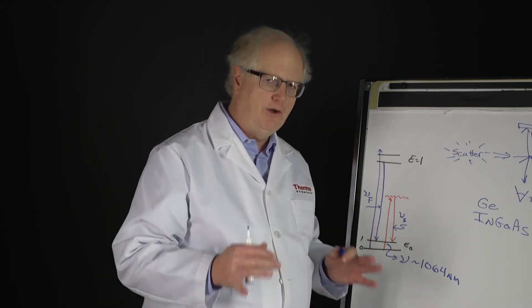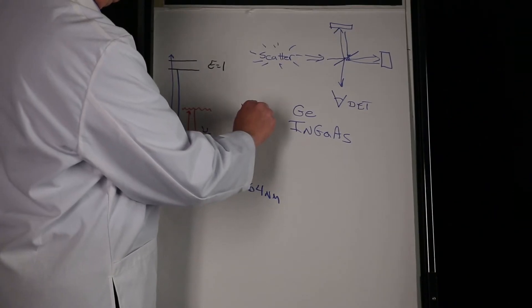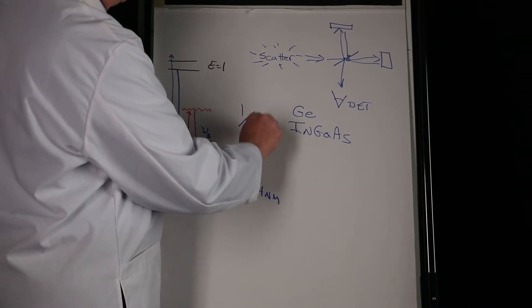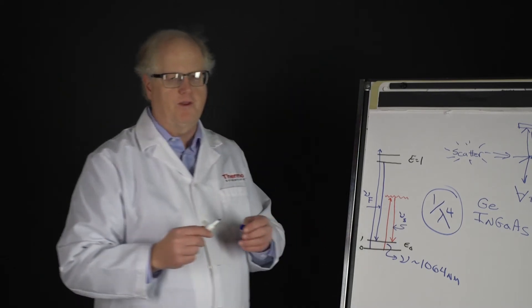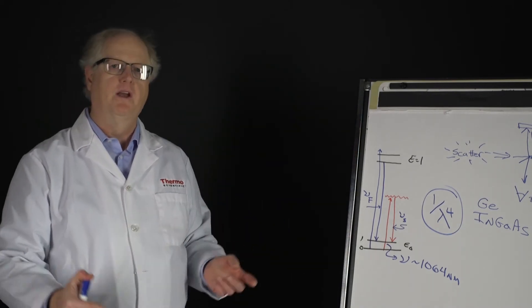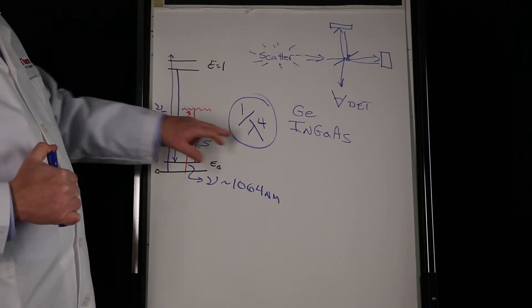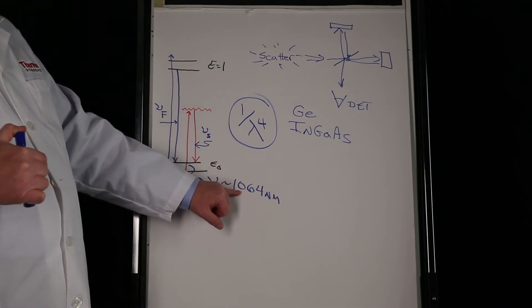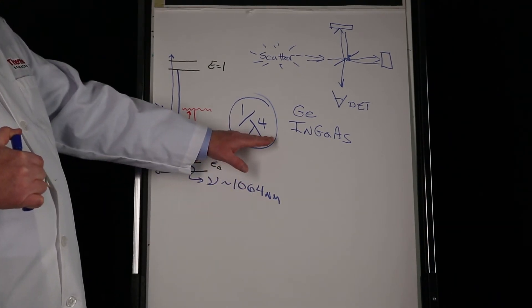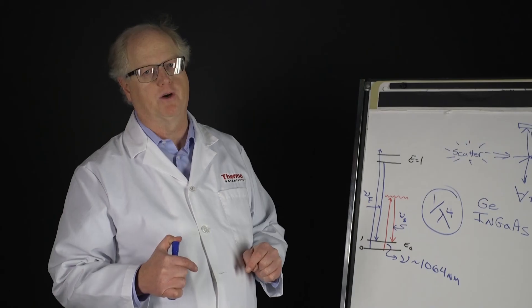So why doesn't everybody do this? It comes back to that big problem: you don't get something for nothing. It's the 1 over lambda to the 4th efficiency, which is the negative to this. Yes, you're avoiding fluorescence, but at 1 over lambda to the 4th where lambda is now way up here at 1064 nanometers. So you've got an extremely long wavelength laser - the efficiency drops in a hurry.